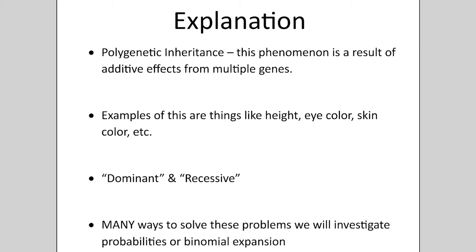There are lots of different ways you can solve polygenic problems. But there are two simple calculations that I find the easiest to understand, which are the rules of probability and binomial expansion. Using the combination of these two techniques is going to be the quickest and easiest way to find the answers to polygenic inheritance problems. Also, by doing these math calculations, you're going to cut down on the amount of errors that you will make.